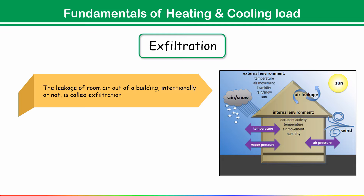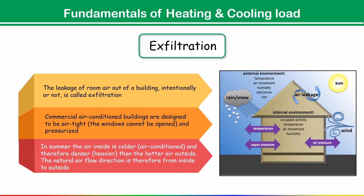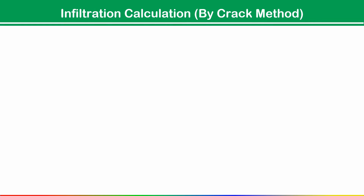Exfiltration is the leakage of room air out of a building, intentionally or not. Air going from inside to outside is called exfiltration — leakage of air outside the building through window cracks and door openings. Commercial air-conditioned buildings are designed to be airtight, so the cooler, denser indoor air naturally flows from inside to outside, which is exfiltration.